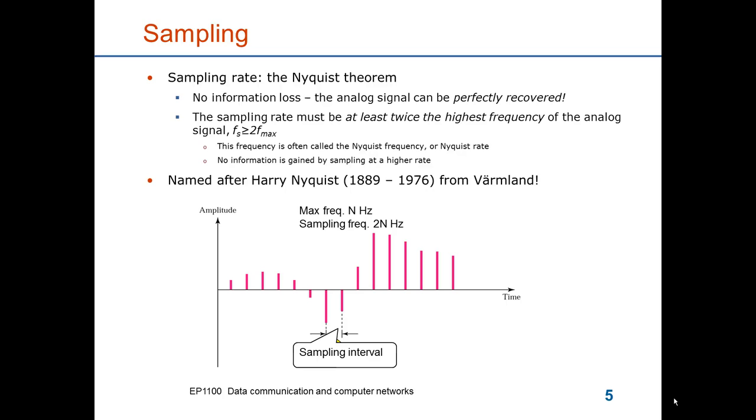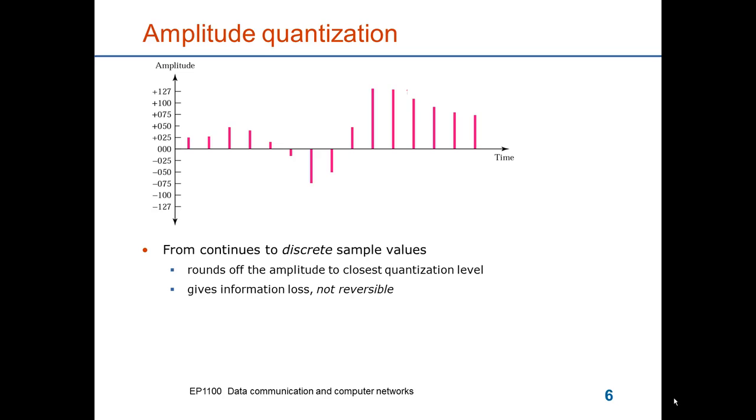Sampling gives us a time discrete signal but it still is continuous in amplitude. To get the digital signal, we need a signal which only takes amplitudes from a limited set of amplitude values. We call this quantization. So we select which amplitude values we should accept in the digital signal, and then we round off each of the sample values to its closest level. This round off gives an information loss and this process is not reversible. So the important aspect of quantization is to design it so that this round off error does not disturb the communication.